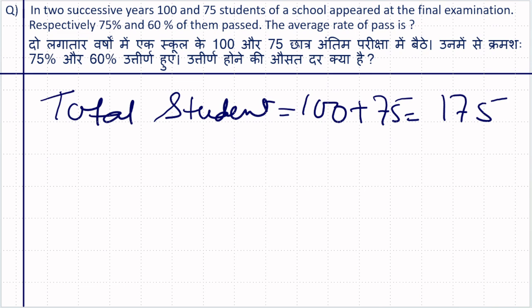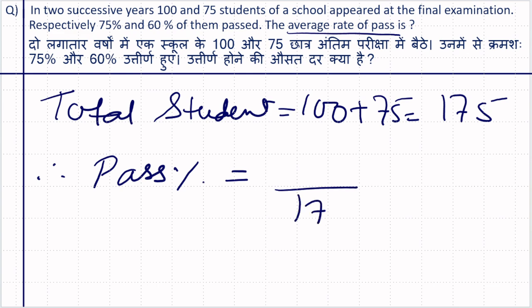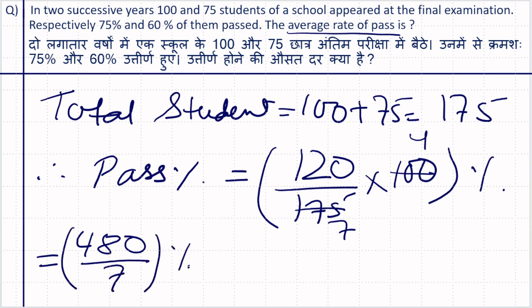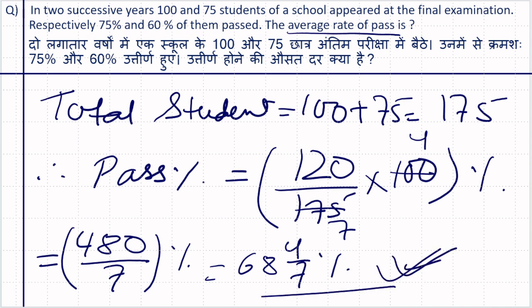175 students, 120 students passed. What is the average rate of pass? Pass percentage equals total passed divided by total students, multiplied by 100. That is 120 over 175 multiplied by 100, which gives 480 by 7 percent. This means the average rate of pass is 68 and 4/7 percent.